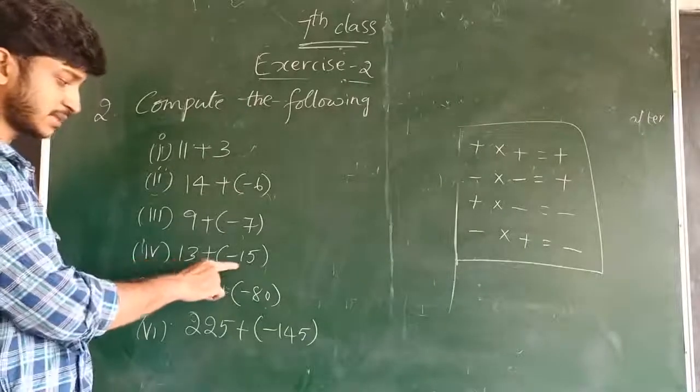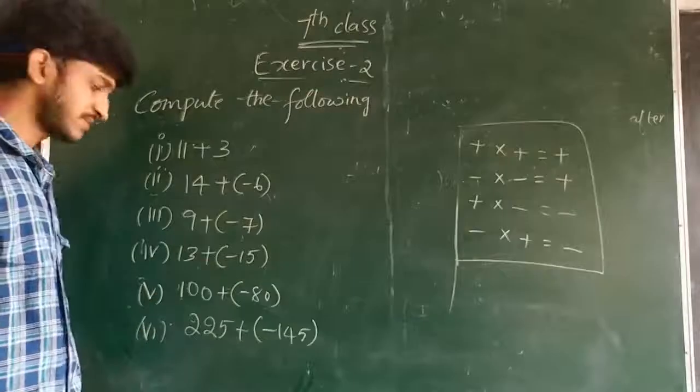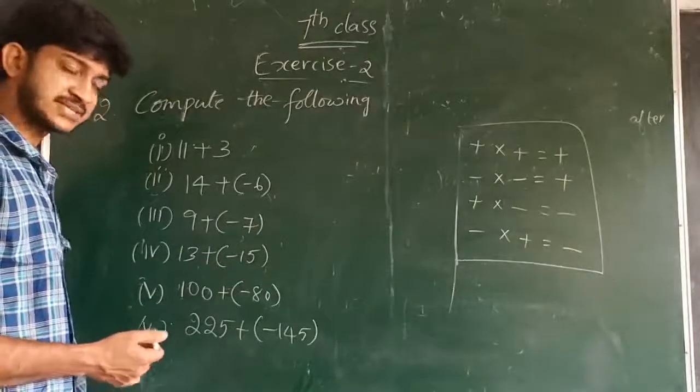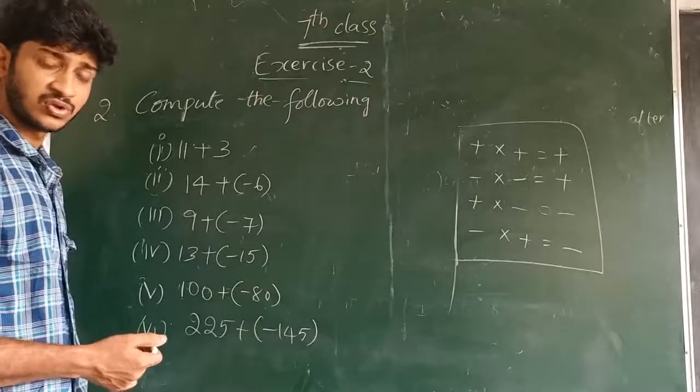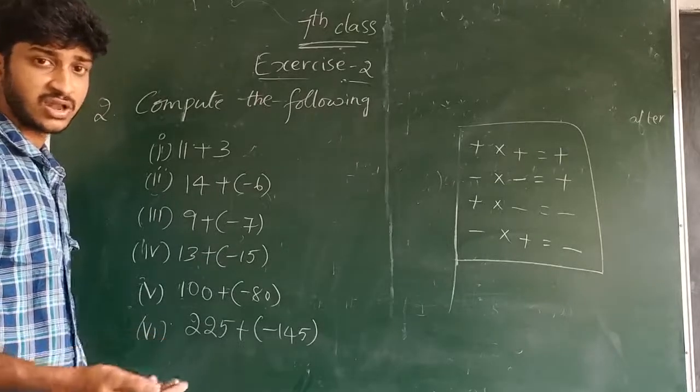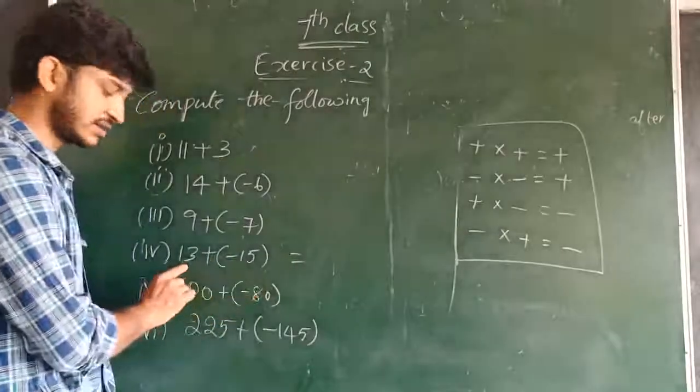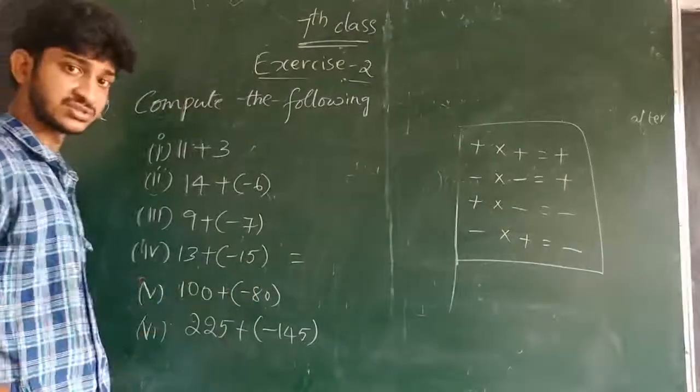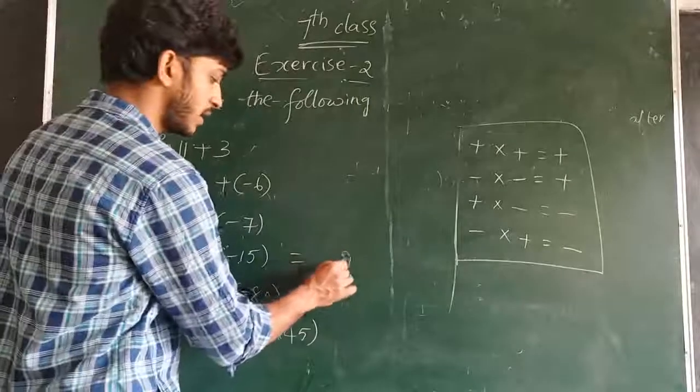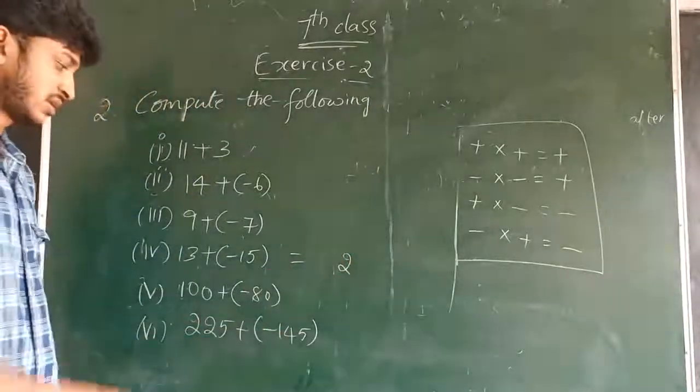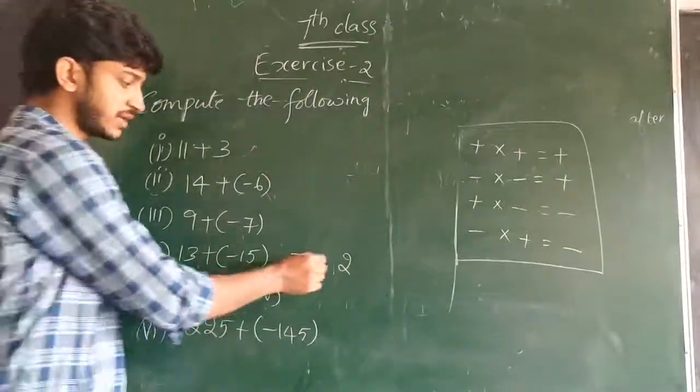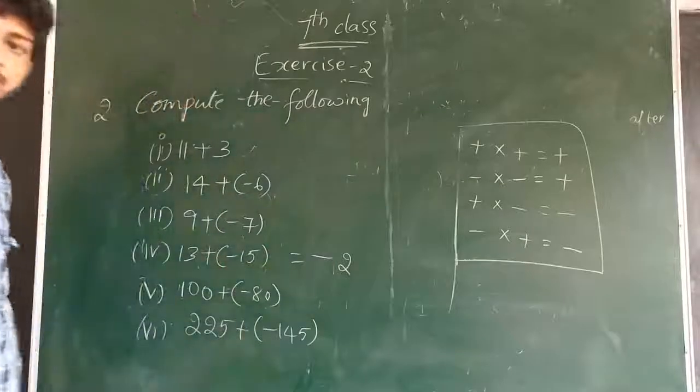The model will be explained to you. 13 plus minus 15, same model. Two different signs, so the largest number is 15. 15 minus 13. What is the answer? 2 is the answer. The symbol of the largest number, the largest number is 15 and it's minus, so the answer is minus 2.